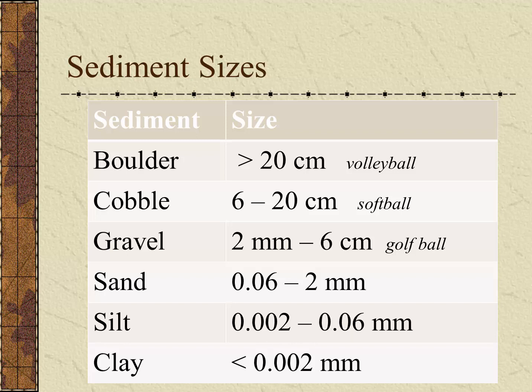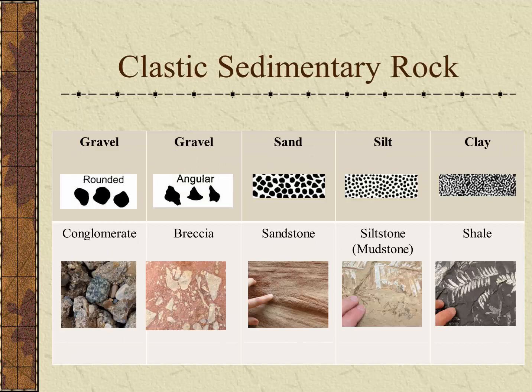Let's take a look at what types of rocks these will form. Gravel may form either a conglomerate or a breccia — rounded gravel fragments form a conglomerate, while sharp and angular gravel fragments form a breccia. Sand will form sandstone, silt will form siltstone, also sometimes referred to as mudstone, and clay-sized particles, the finest of all, will form shale.